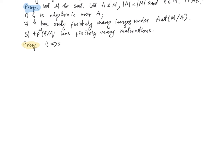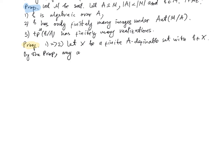Proof. (1) implies (2): Let X be a finite A-definable set such that b is an element of X. By the proposition, any automorphism of M fixing A pointwise permutes the set X, because it has to preserve X setwise. Hence b has to be sent to some other element in X, so there are only finitely many possible images for b under such automorphisms.